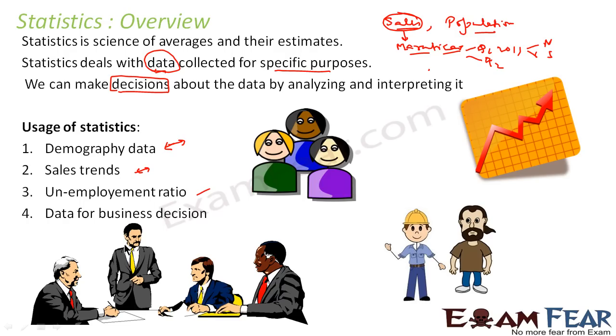Statistics is also used for business decisions. As I told you, you have raw data and then we analyze and interpret the data and come out with some numbers. We say that mean is equal to something, mode is equal to something, or median is equal to something. These values are something which we derive by analyzing and interpreting a huge chunk of data.